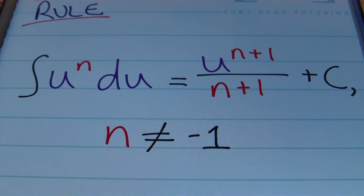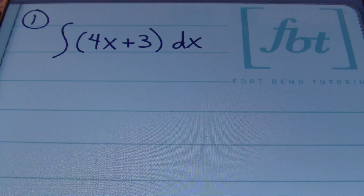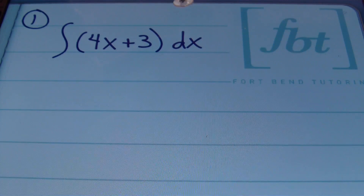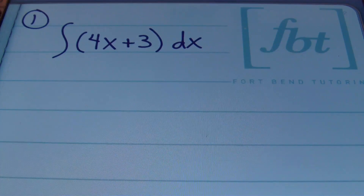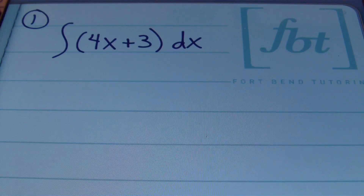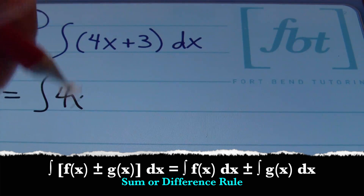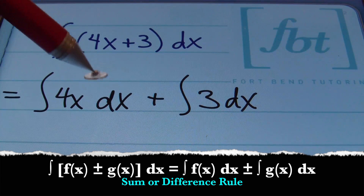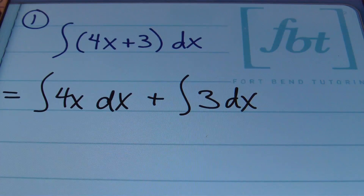We're going to focus on problems that use this rule. In problem number one, we have the integral of 4x plus 3 with respect to x. The dx means this derivative was taken with respect to x — they're giving you the derivative and you're going back to find the original function. I recognize we have two terms, so using integration rules I'll separate this into the integral of 4x dx plus the integral of 3 dx, keeping that dx to indicate we're integrating with respect to x.